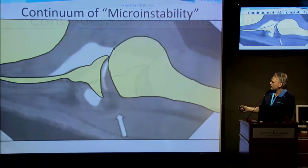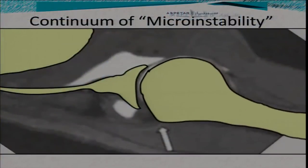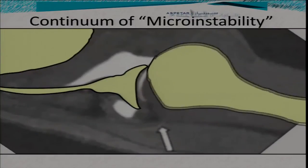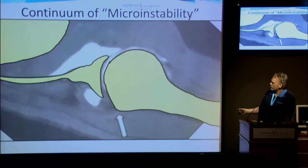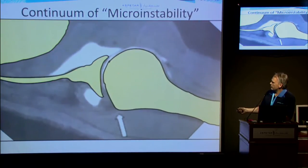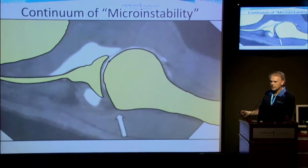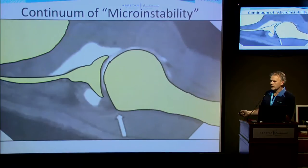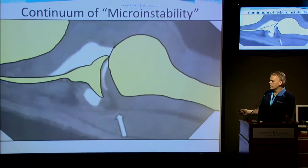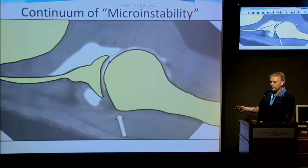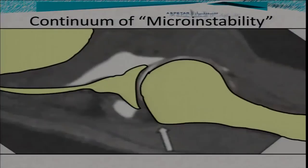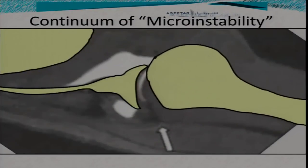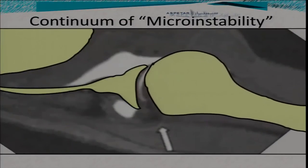Central to the notion that the throwing shoulder is a manifestation of anterior instability is the idea of a continuum of micro-instability — some people's humeral head slips a little bit forwards, other people's a lot forwards. If this is the central thing going on with the throwing shoulder, then the incidence of anterior instability in throwers should be higher than in the general public. Let's examine that.